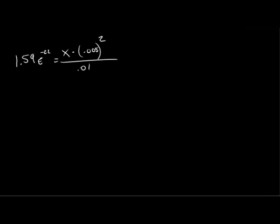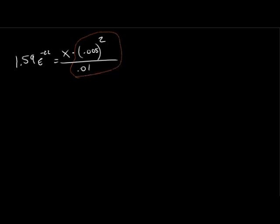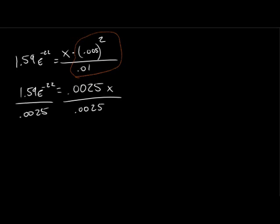We'll simplify this equation by doing the division on the right side. If we divide those two numbers, 0.005 squared, divided by 0.01, we'll end up with 0.0025, with the x still in front of it. We'll have 1.59 e negative 22nd, still on the left. Then we divide both sides by 0.0025. When we divide, we'll end up with x equals 6.36 times 10 to the negative 20th molarity. This will be the amount of remaining mercury.